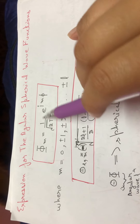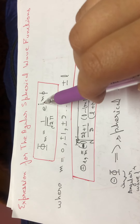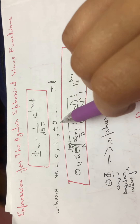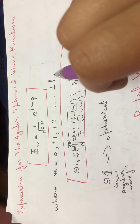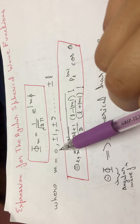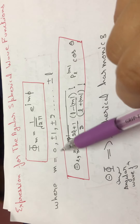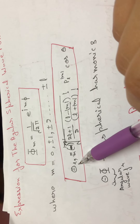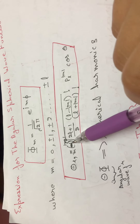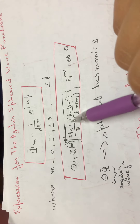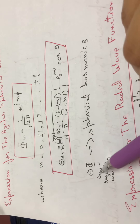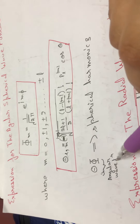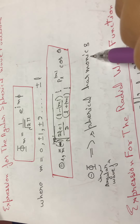The azimuthal function is Φ_m = (1/√2π) · e^(imφ), where m = 0, ±1, ±2, … ±l, ranging from −l to +l. The associated Legendre function Θ_lm = (−1)^|m| · √[(2l+1)/2] · ... and so on. The product of these two functions — Φ_m and Θ_lm — gives the angular wave function, which is known as the spherical harmonics.